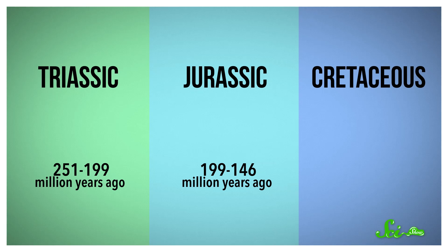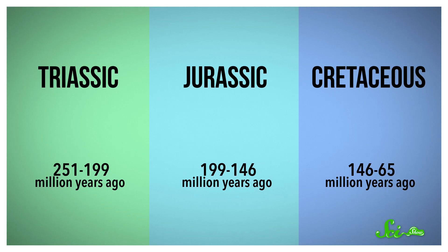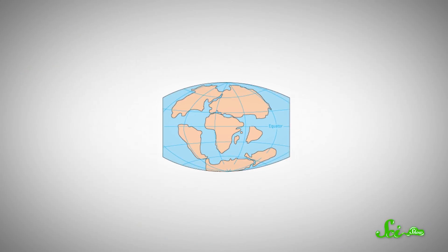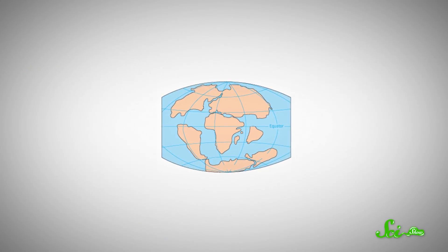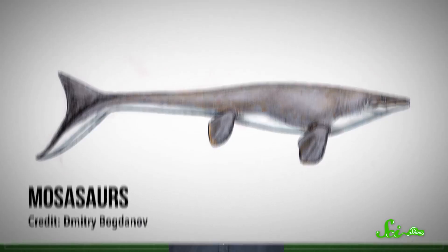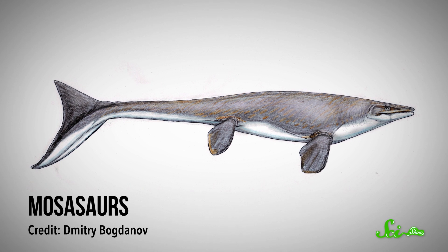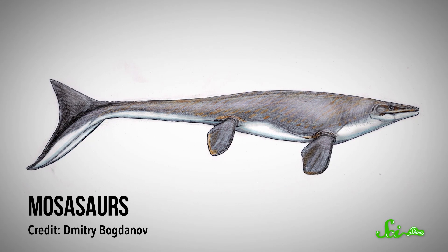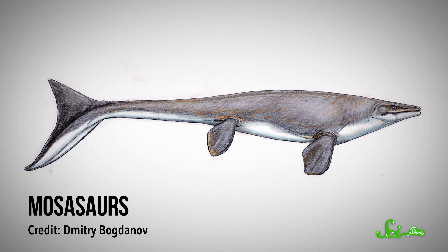The Cretaceous, which means chalk-bearing, lasted from 146 to 65 million years ago and was even warmer than the earlier Mesozoic. The continents continued to drift apart, heading for where they are now. As the seafloor spread, it released carbon trapped in the Earth's crust and caused some serious global warming. Ichthyosaurs disappeared sometime during the Cretaceous, but a new type of marine reptile appeared — the mosasaurs — aquatic lizards related to the monitor lizards we have today, but not closely related to dinosaurs.